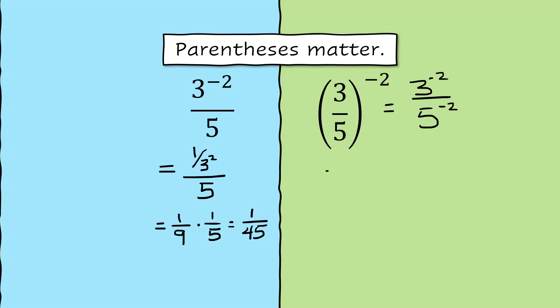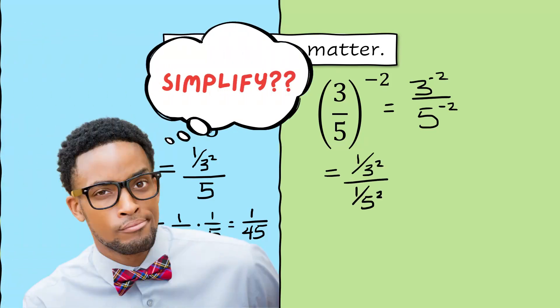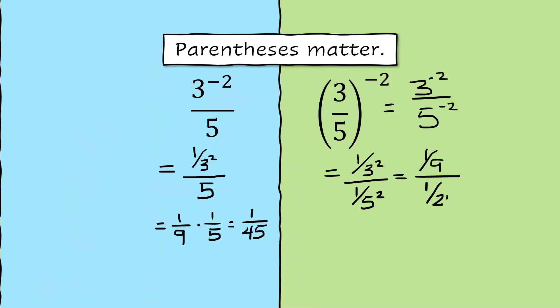Simplifying, or in this case making it a little more complicated, you end up with 1 over 3 squared divided by 1 over 5 squared. That's 1 9th divided by 1 25th.